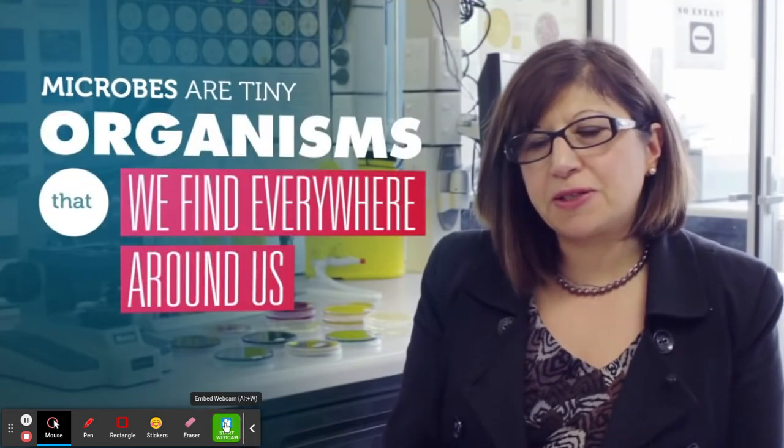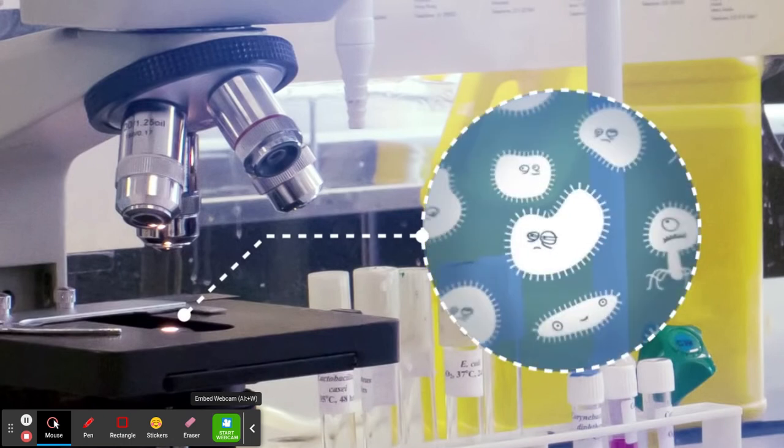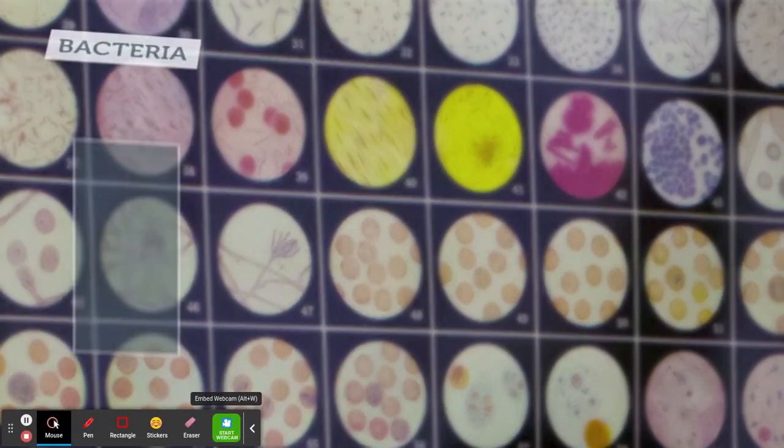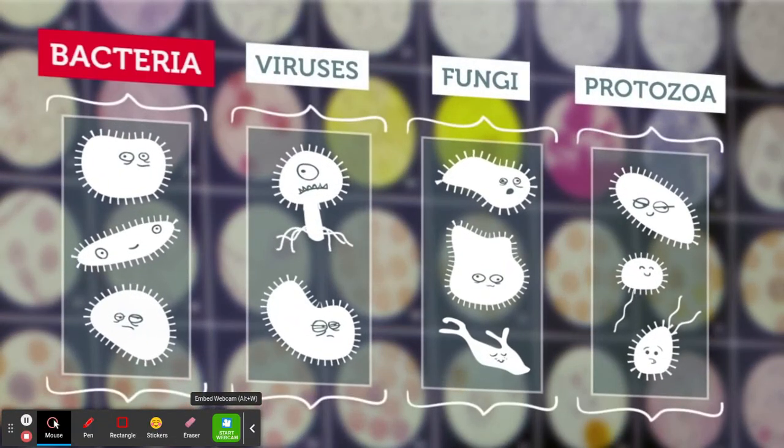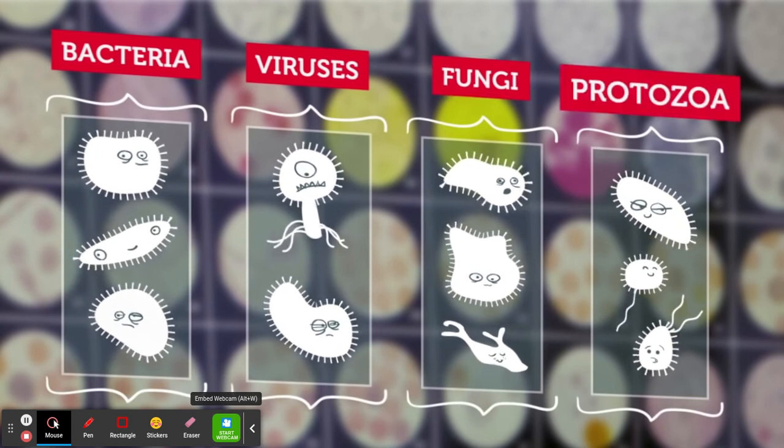Microbes are small, tiny organisms that we find everywhere around us, and they are so small that we need a microscope to look at them. Those microbes or microorganisms normally belong to four major groups: bacteria, viruses, fungi, or protozoa.